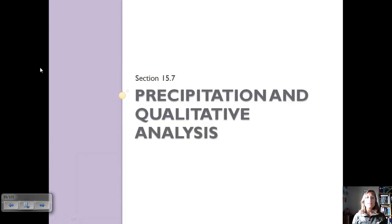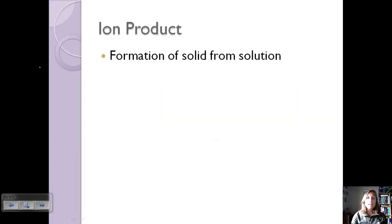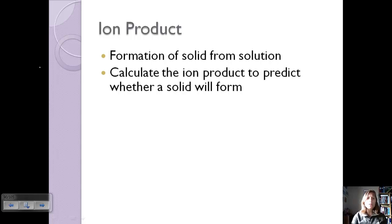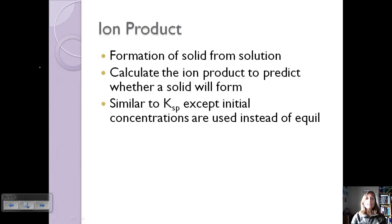Today we're going to discuss section 15.7. We've normally been talking about solutions or salts dissociating into their ions, but now we're going to talk about forming a solid from the solution — the opposite direction. To determine whether or not a solid is going to form, we calculate what's called the ion product, Q. This is similar to Ksp, except we use initial concentrations instead of equilibrium concentrations.